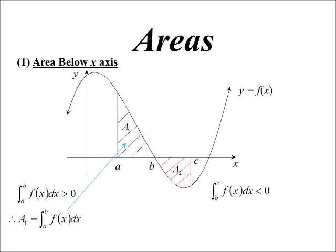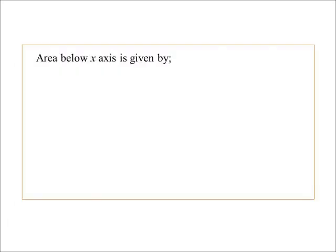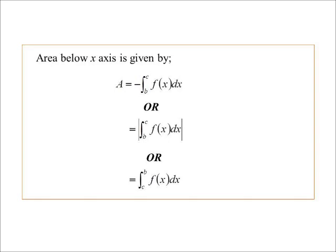So the area — there are a couple of ways to handle it. You could take the negative of the integral, or put absolute value signs around it. So if you want to find an area below the x-axis: take the negative of the integral, or the absolute value of the integral — both give a positive amount. Or instead of integrating from b to c, integrate from c to b, because that will also give a positive amount.